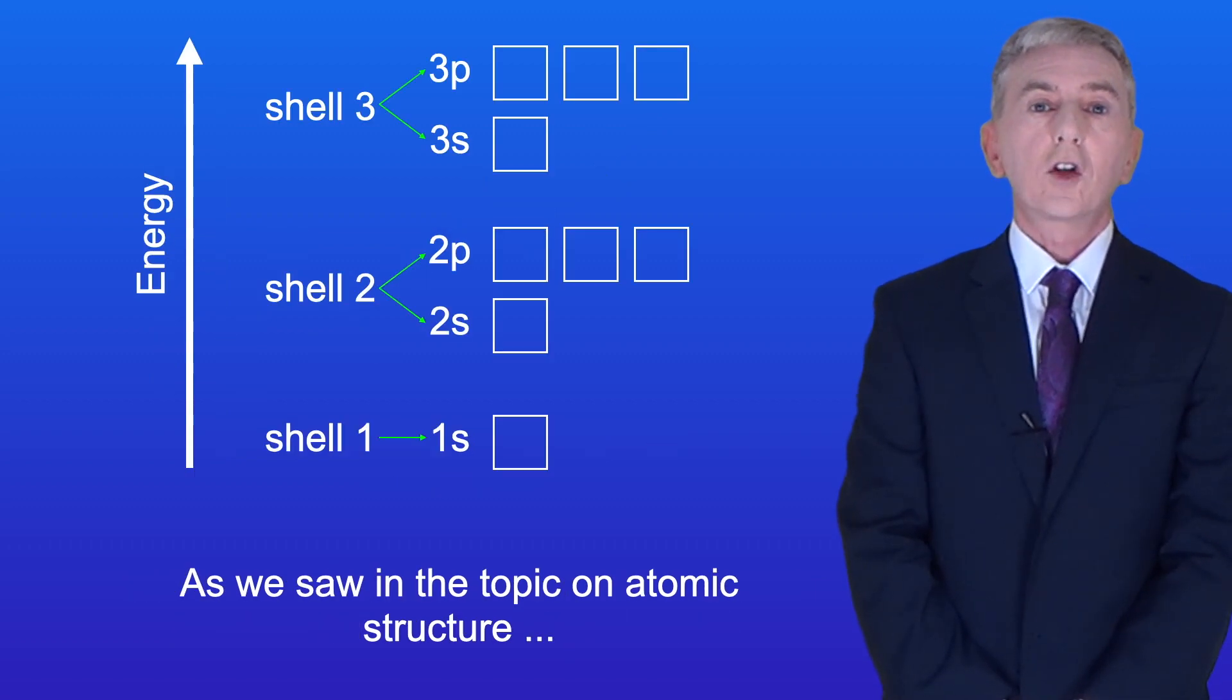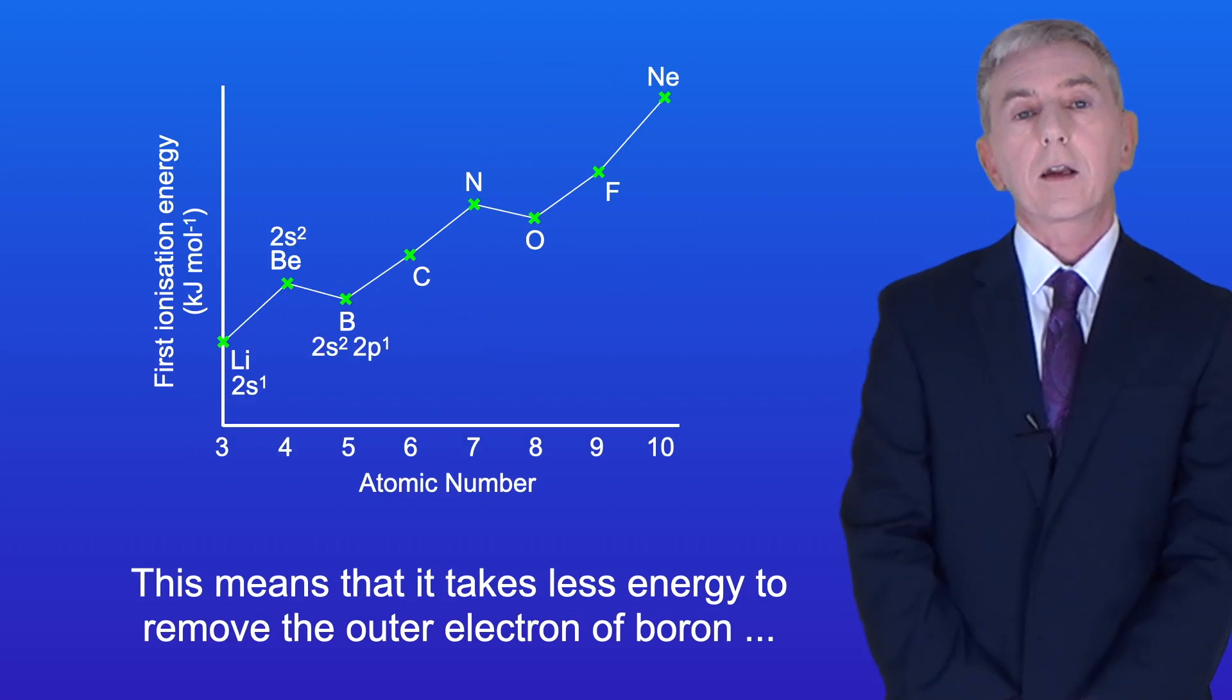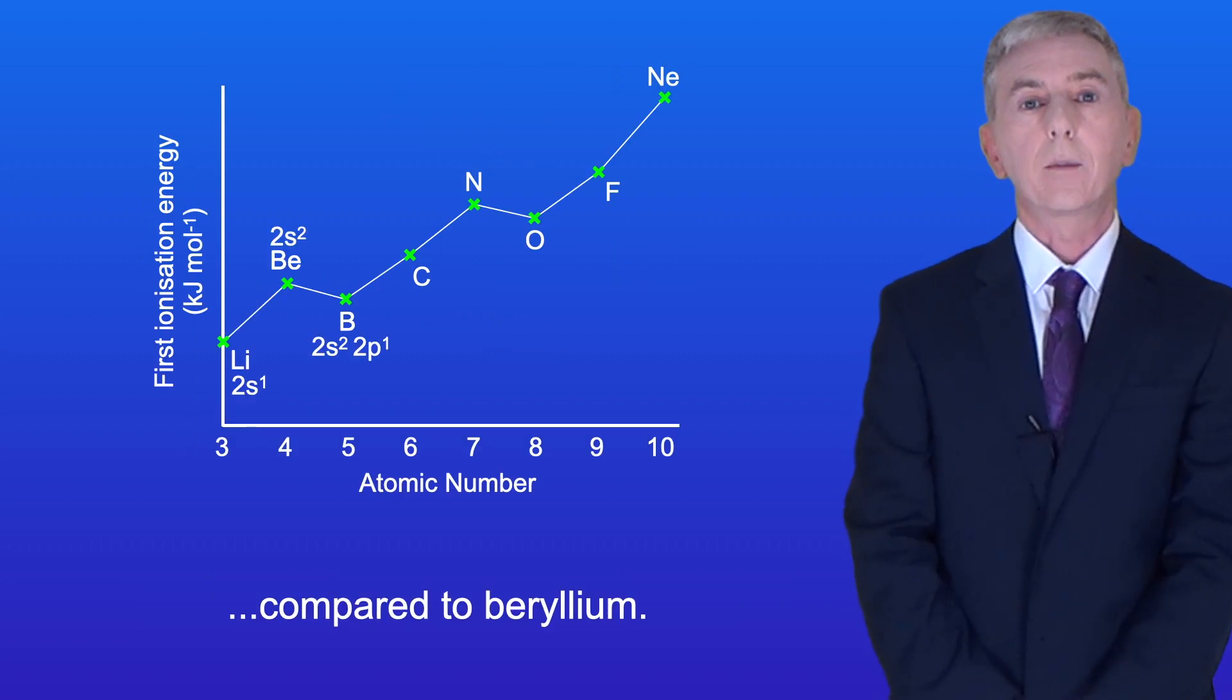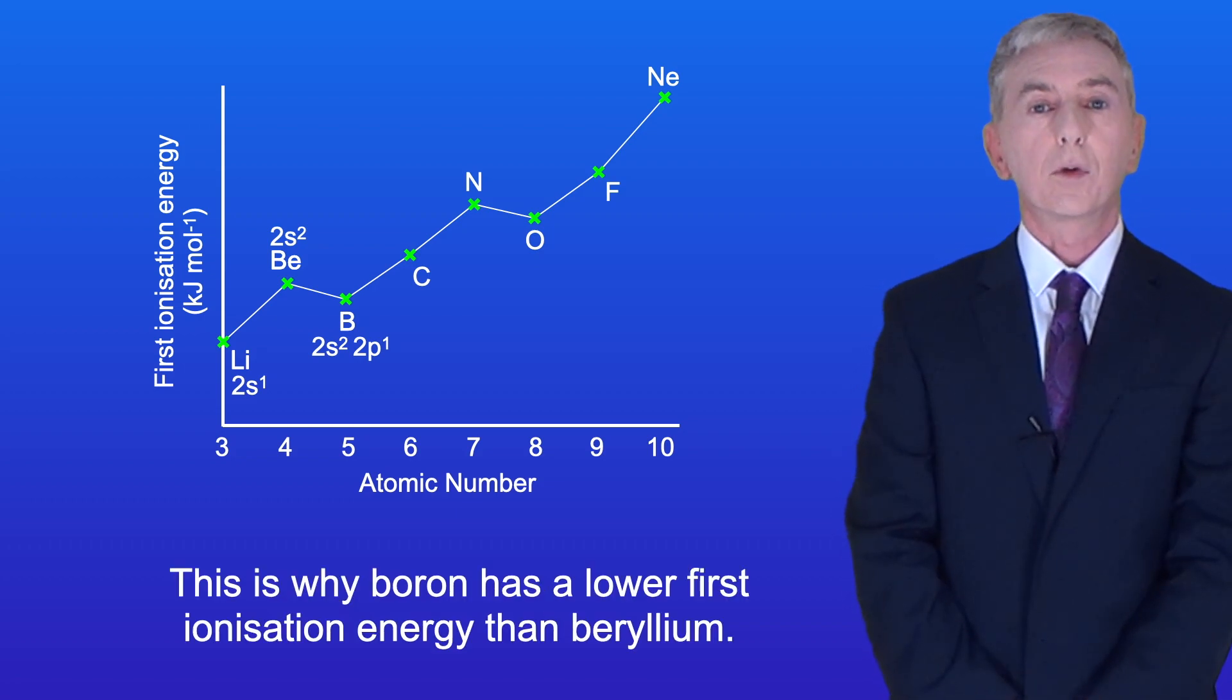As we saw in the topic on atomic structure the 2p subshell has a higher energy than the 2s subshell. This means that it takes less energy to remove the outer electron of boron compared to beryllium. And this is why boron has a lower first ionization energy than beryllium.